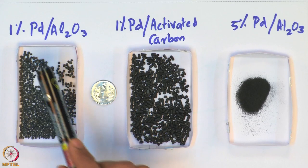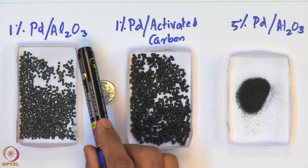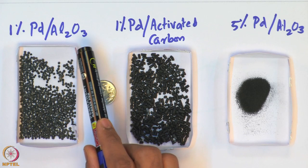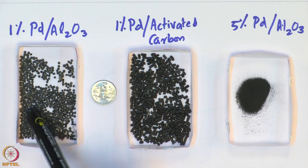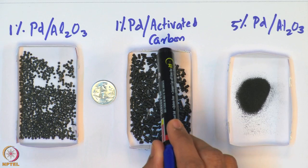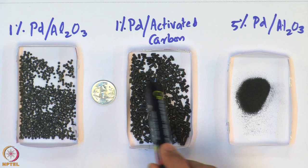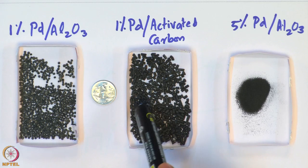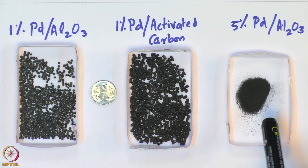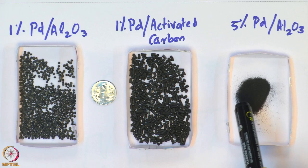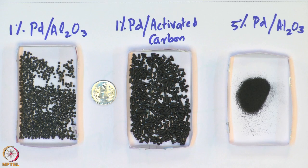Here is the first example: 1% palladium coated or impregnated on the substrate alumina Al₂O₃. The particles are spherical in nature — small balls about 2 mm in diameter. Another example shows 1% palladium impregnated on activated carbon, where the substrate is cylindrical in nature with many pores in which the palladium is impregnated. A third example shows tiny spherical powdery particles of 5% palladium coated on a substrate of alumina. Catalysts come in many different shapes, and these are just a few examples.